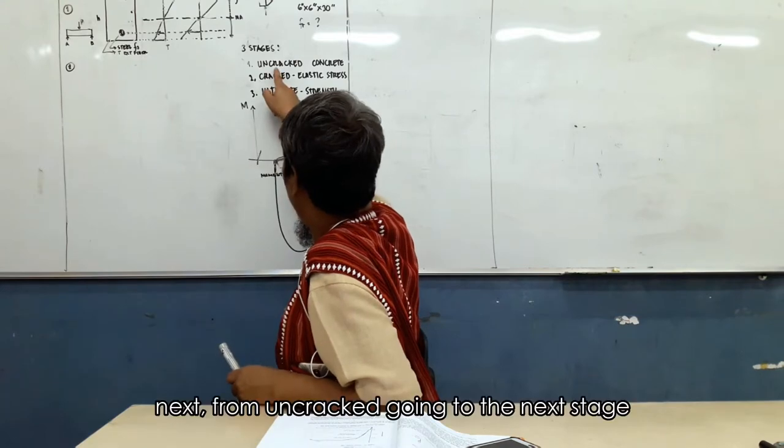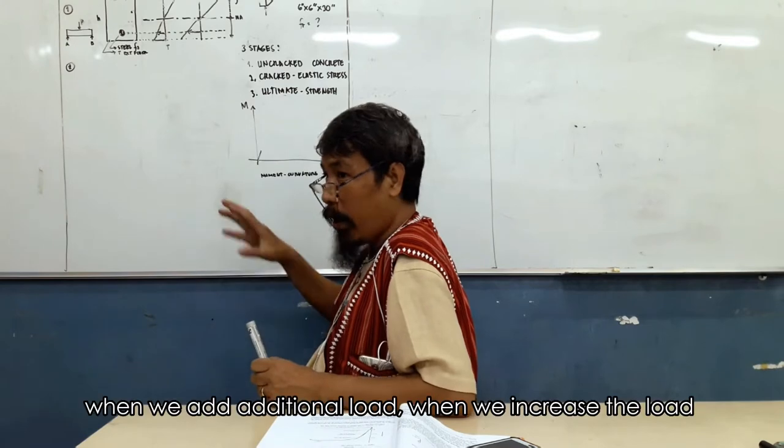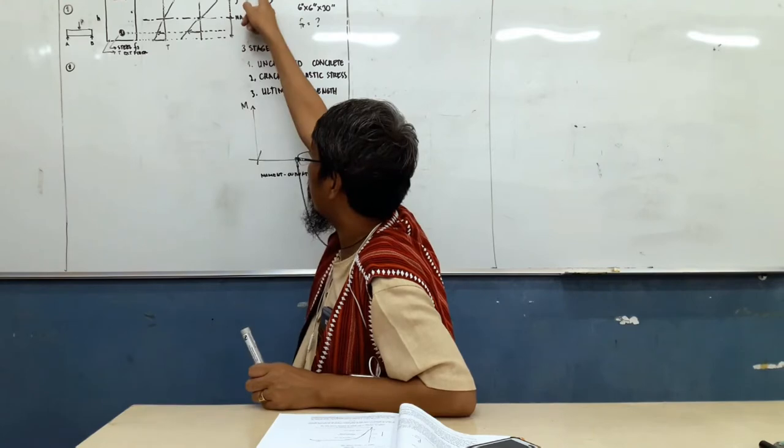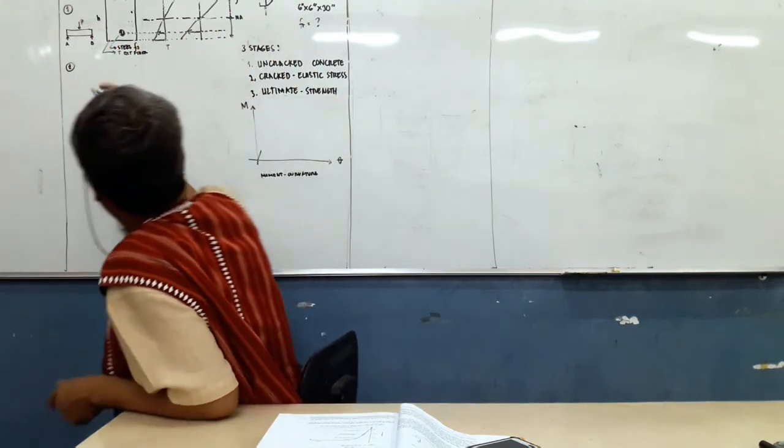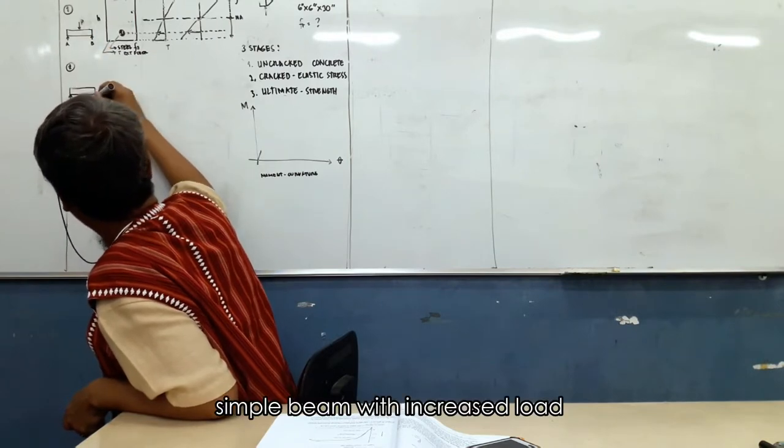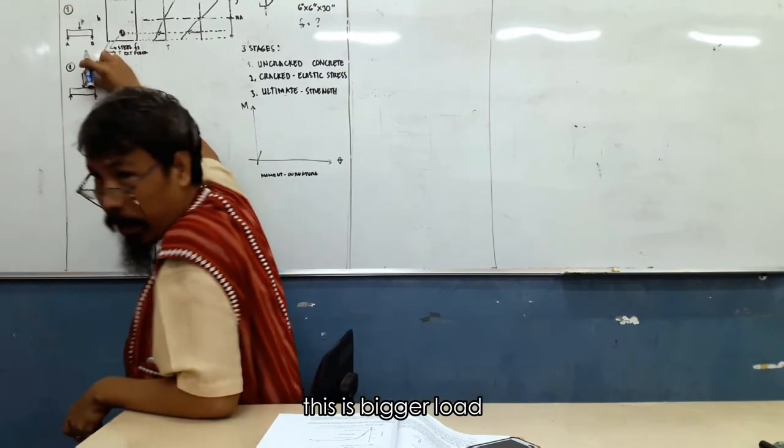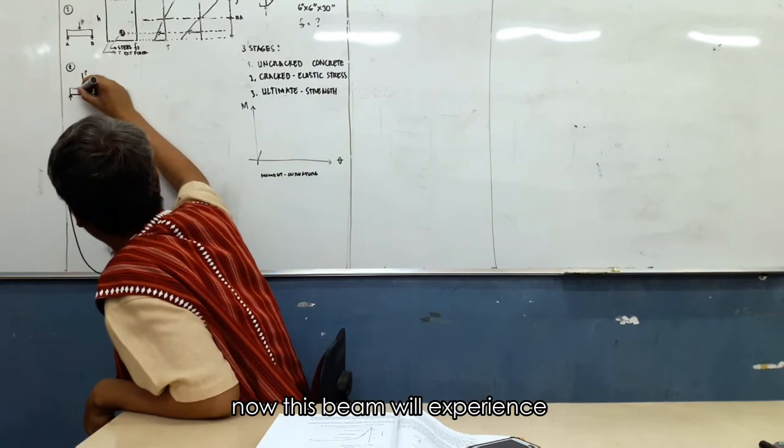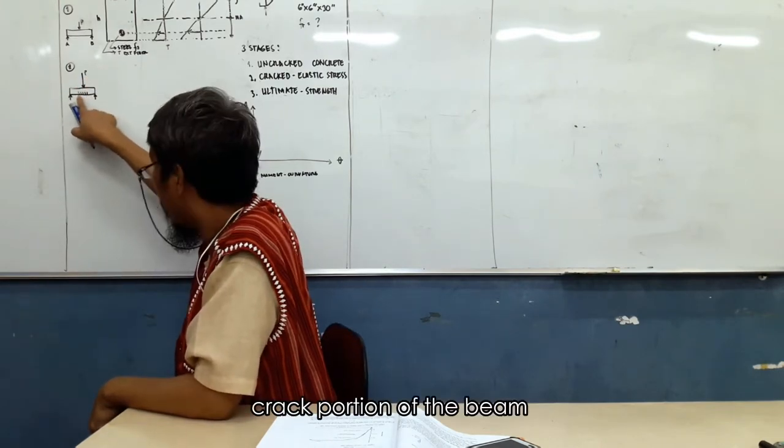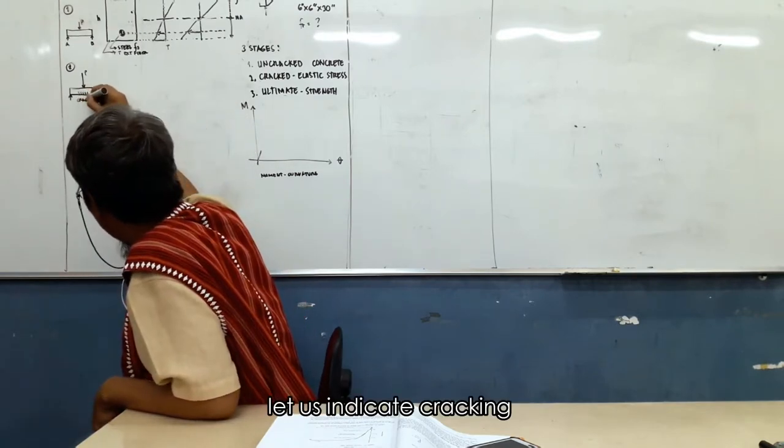Next, from uncracked, go to the next stage. When we add additional load, when we increase the load, we'll have a simple beam like this with increased load. So this is small, bigger load. Now, this beam will experience what? Those are the cracks. Crack portion of the beam. Let us indicate cracking.